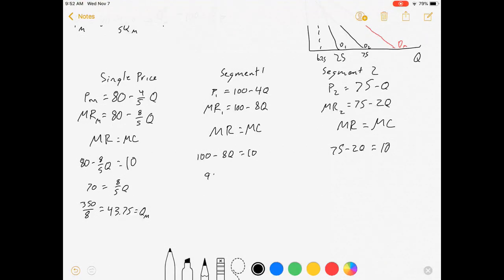This is 90 equals 8Q. Q for segment one, if we do it separately, is just 11.25. And if we do segment two separately, that's 65 equals 2Q, 32.5 equals Q for segment two. So first thing to notice is that this plus this equals that. They're going to choose the same quantity in this example.